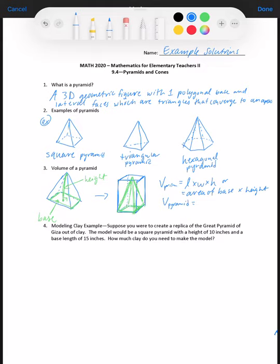The volume of the pyramid will be a fraction of the volume of the prism because the pyramid takes up less space. What fraction? What we do is take the pyramid, fill it with water, and pour it into the prism to see how many times you can do that. It turns out you can do exactly three pyramids into a prism of the same base and height. So the volume of the pyramid is one-third of the area of the base times the height.